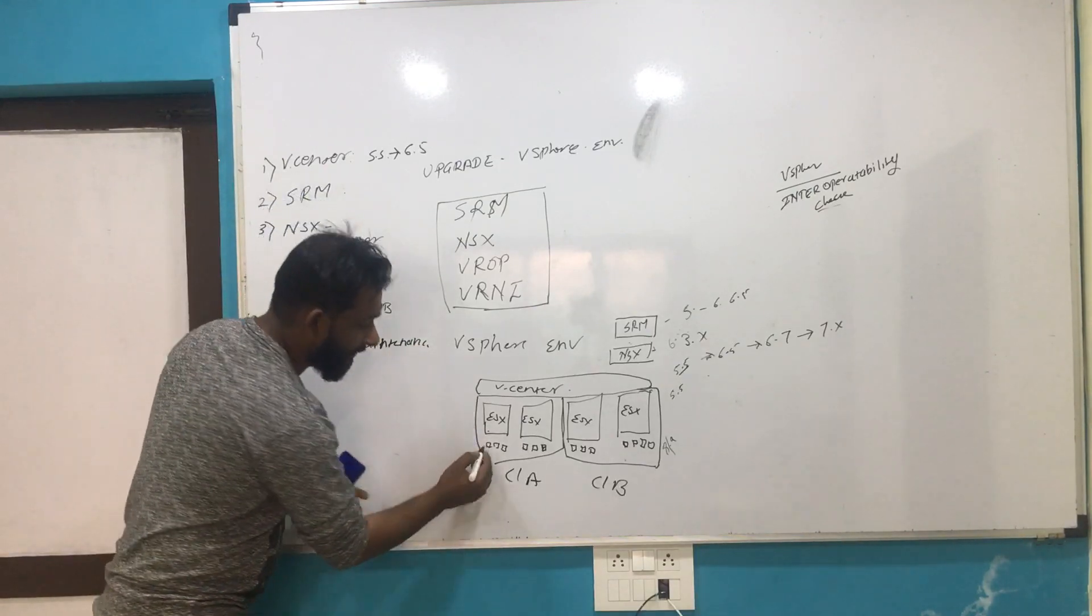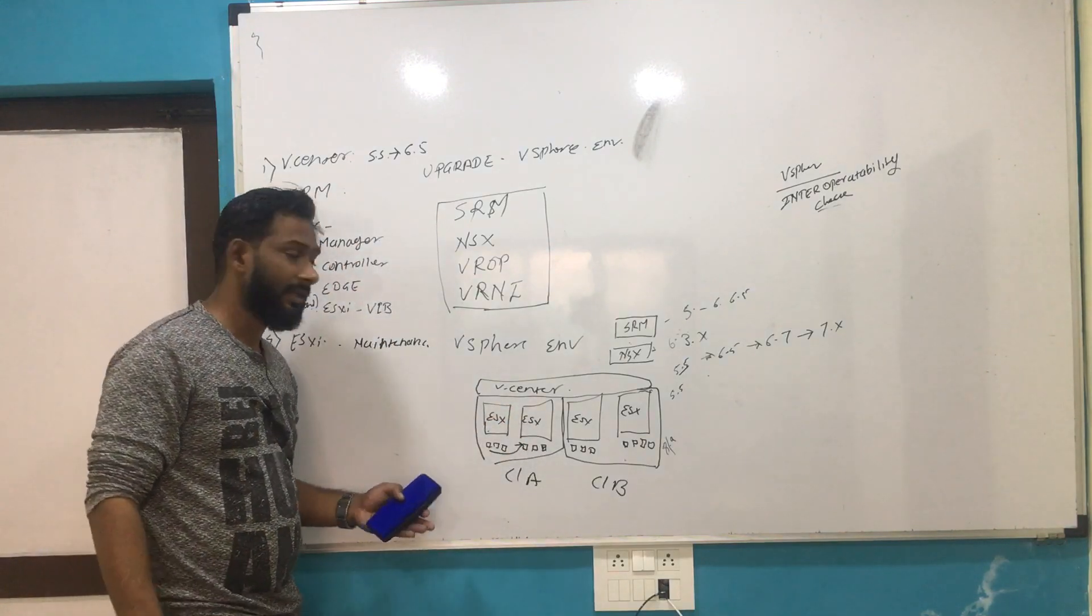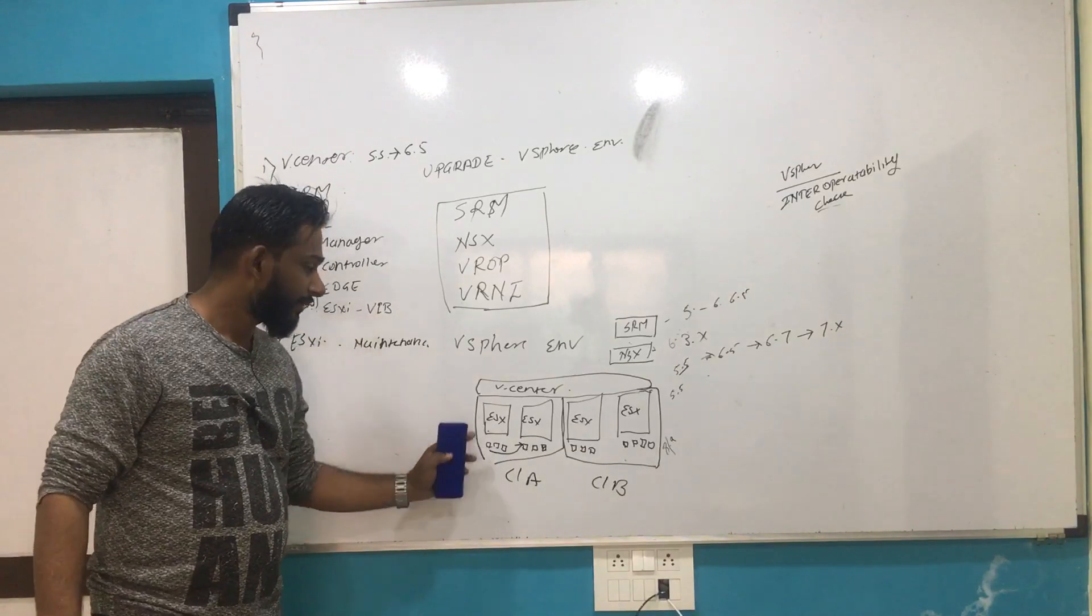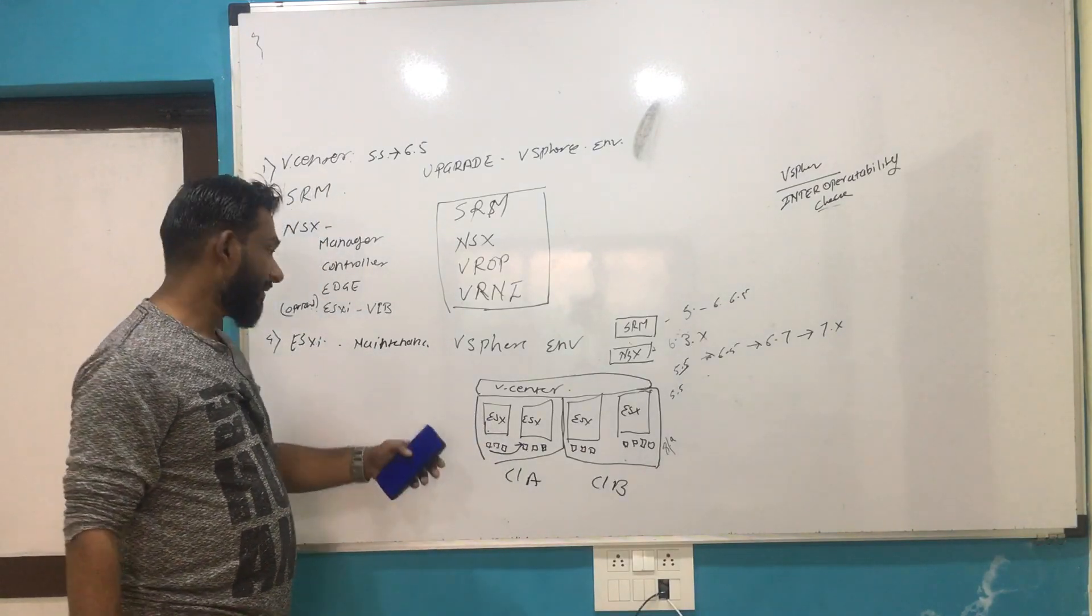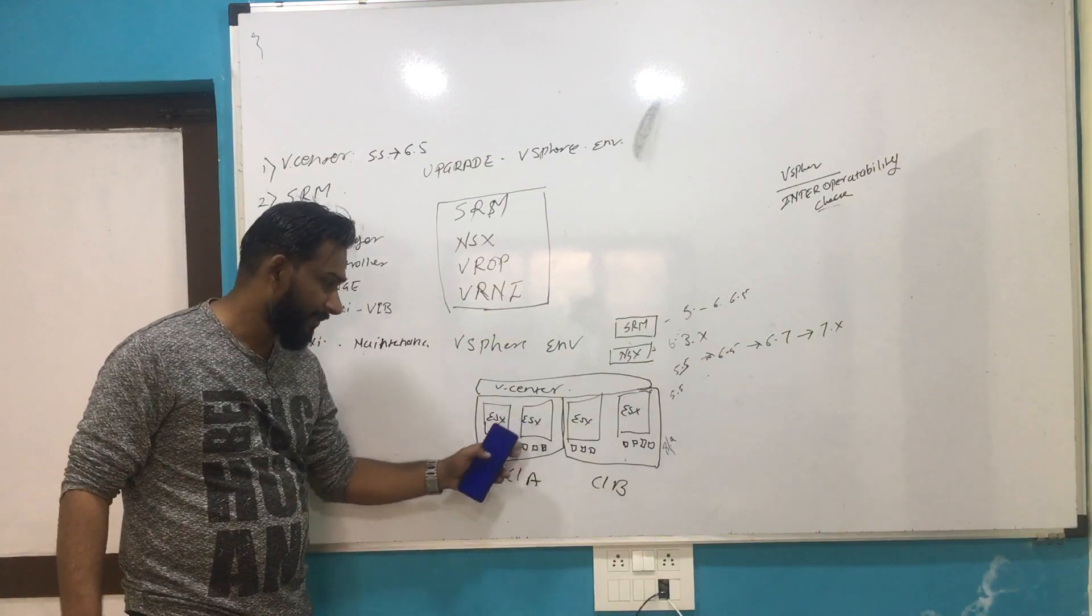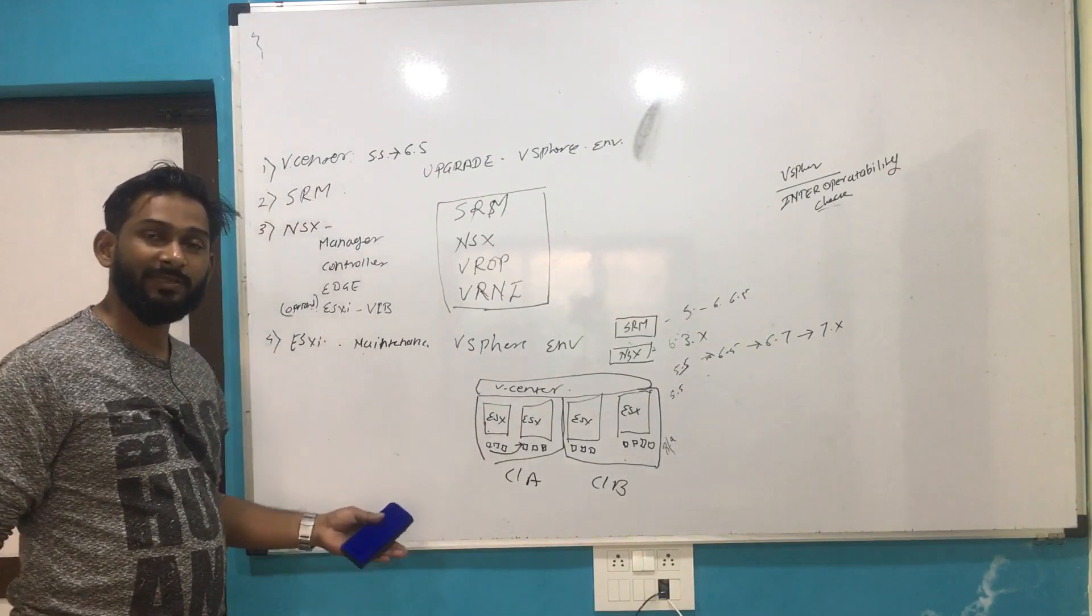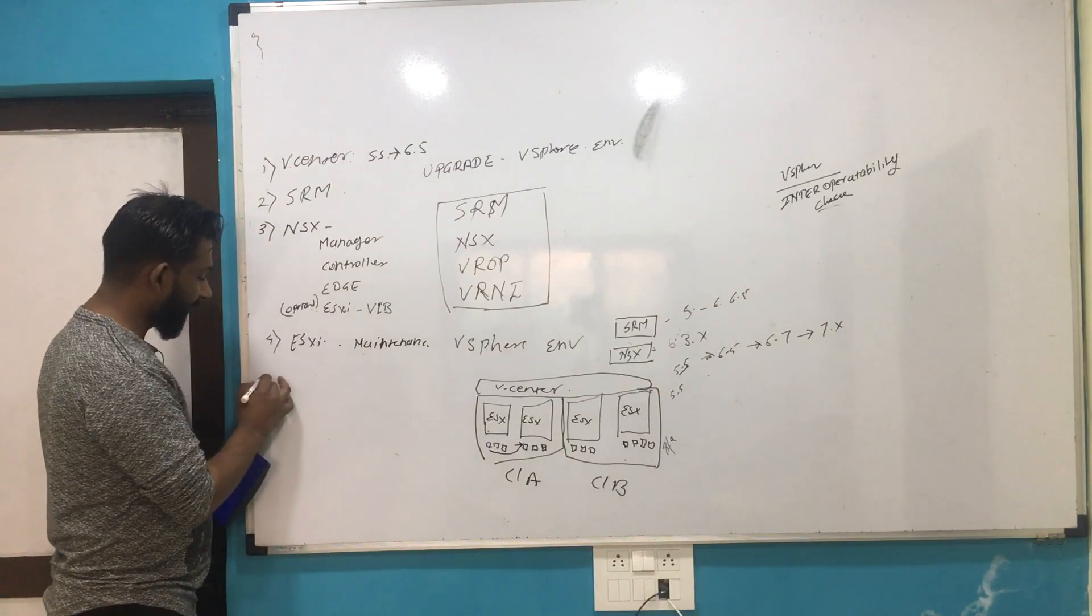So these VMs will be moved to another ESXi host in the cluster. Of course, there will be more hosts in your production. This host will become empty, and then we perform the upgrade activity. Once the upgrade completes, you take it out of maintenance, and then again the VMs will come back to their original host as per the load balancing or as per the DRS recommendation.